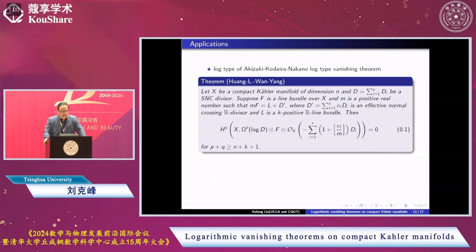That's a log generalization of Poincaré's vanishing theorem for ample vector bundles. Also, a log generalization of Akizuki-Kodaira-Nakano vanishing theorem, log vanishing theorem. We consider a compact Kähler manifold dimension n and D, a simple normal crossing divisor. Suppose we have a line bundle F and a positive real number M such that the multiple of F equals L plus D', where D' is an effective normal crossing R-divisor and L is a k-positive real line bundle on X.